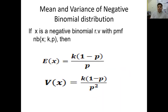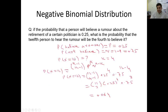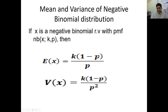As we discussed mean and variance for the binomial and hypergeometric distributions, similarly for the negative binomial distribution, mean = K(1-P)/P divided by P, and variance = K(1-P)/P^2. By taking the square root of variance, you can find the standard deviation. Thank you.